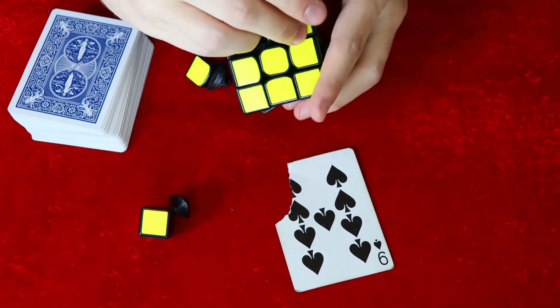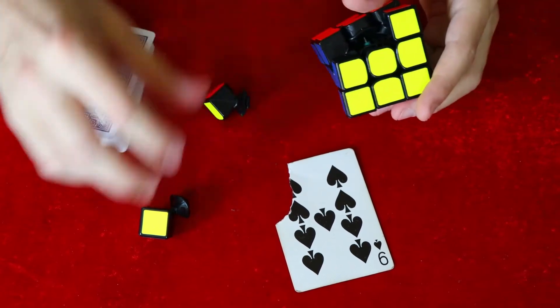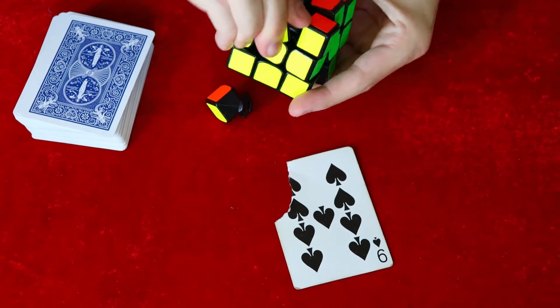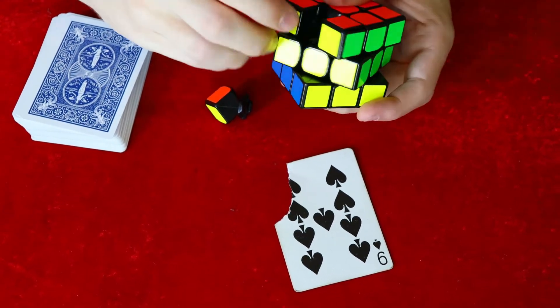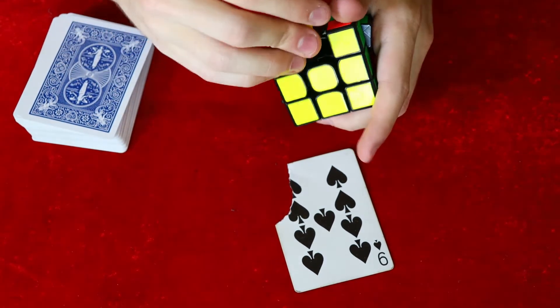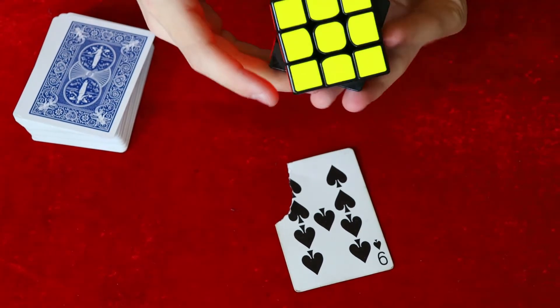So now we're just going to put the cube back together. So there's the one piece. Let's get this other corner piece here. Put that in. Eventually. There we go. And then finally the middle piece here. And now our cube is completely back together.